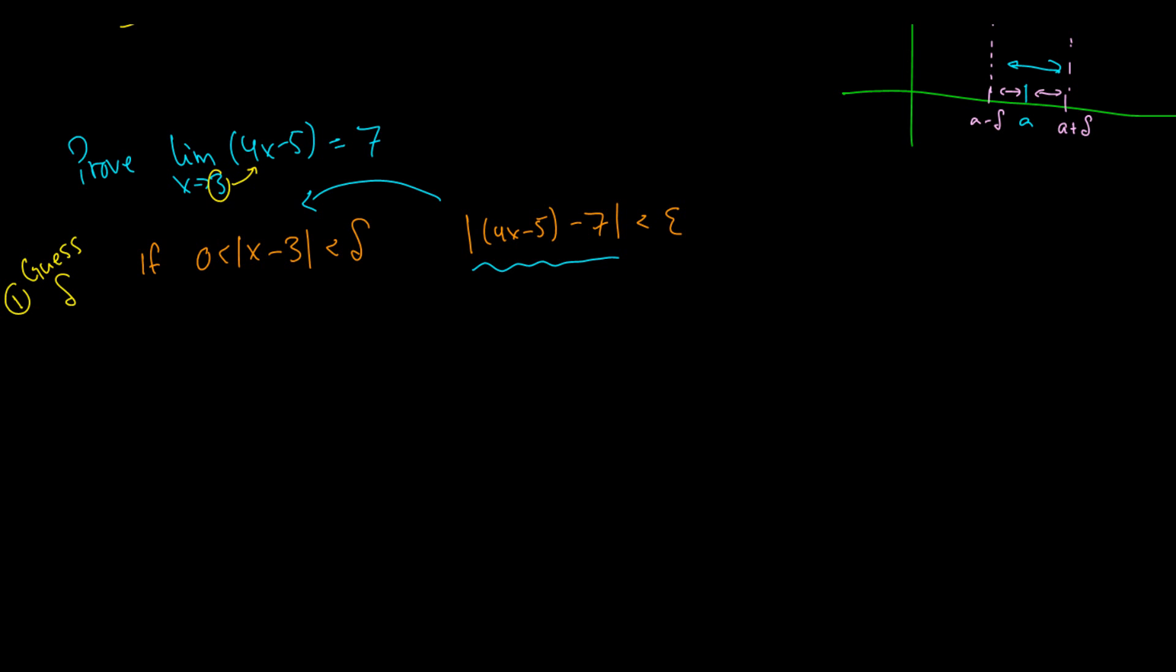And if we guess a delta, then we can pick that delta, and we can see if we can get it out to become an epsilon later. And if it does, then we know that the limit exists, and we have our proof.